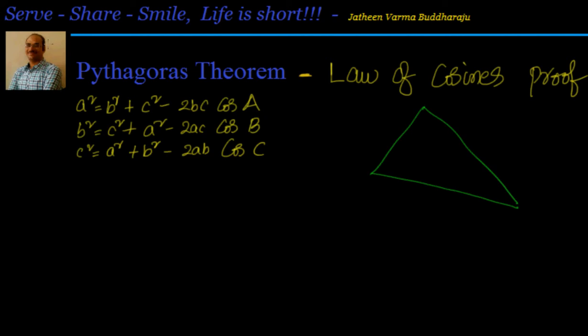I will take a triangle. Let us say this is our triangle A, B, and C. We know that the opposite sides are small b, small c, and small a.